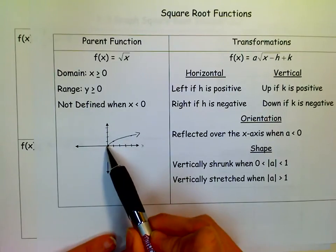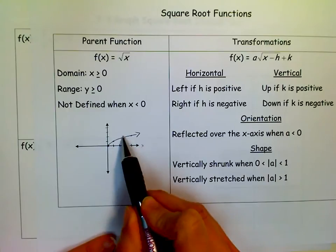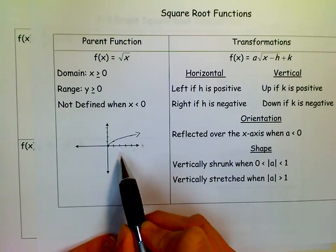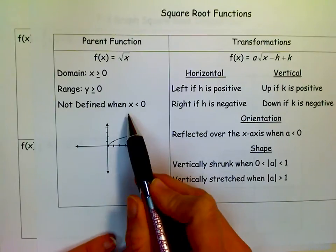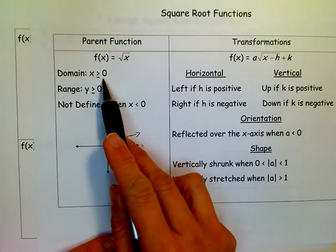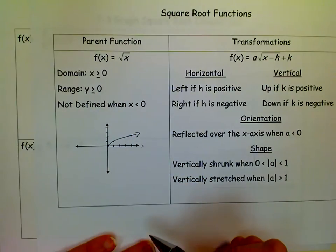The parent function, if it hasn't been shifted anywhere, starts at (0,0), goes out in one direction, goes right forever and up forever. Thus the domain is always greater than or equal to 0, and the range is greater than or equal to 0.